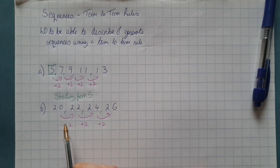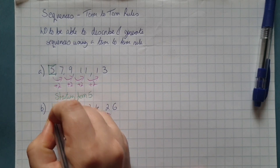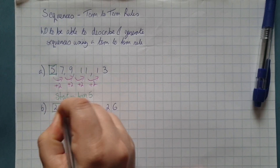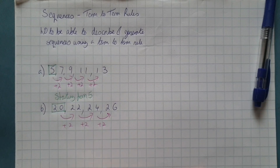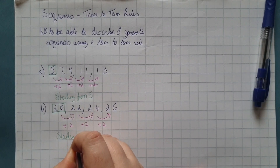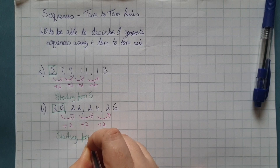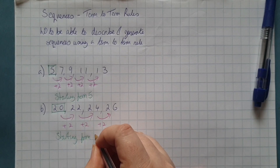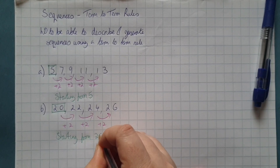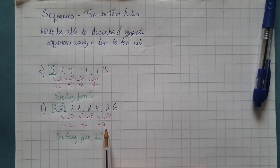For sequence B, we look at the starting point and we're starting from 20. So we can describe this sequence as: starting from 20, add 2.